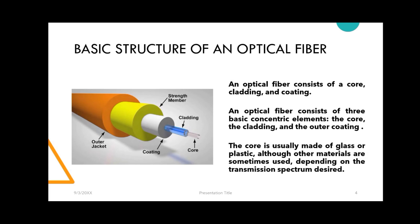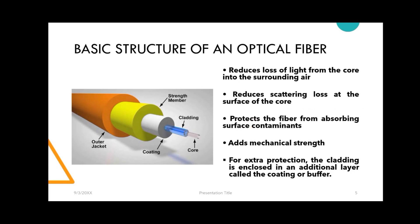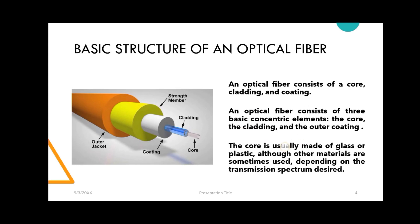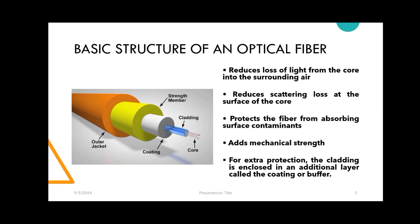The core is glass. The cladding reduces the loss of light from the core into the surrounding air. It also reduces scattering loss. To protect the fiber from absorbing surface contaminants, the cladding also helps protect the mechanical strength of the fiber.